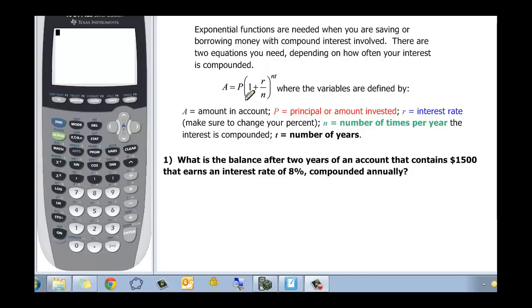Here's the first one: A is equal to P times 1 plus R over N to the NT, where A is the amount in the account, P is the original amount that we invested, R is the interest rate, and we will remember to change the percent into a decimal. N is the number of times that this is being compounded per year, and then T is the number of years.